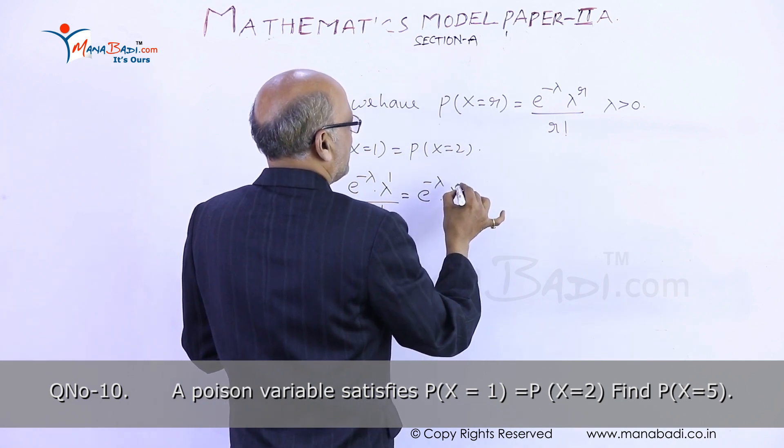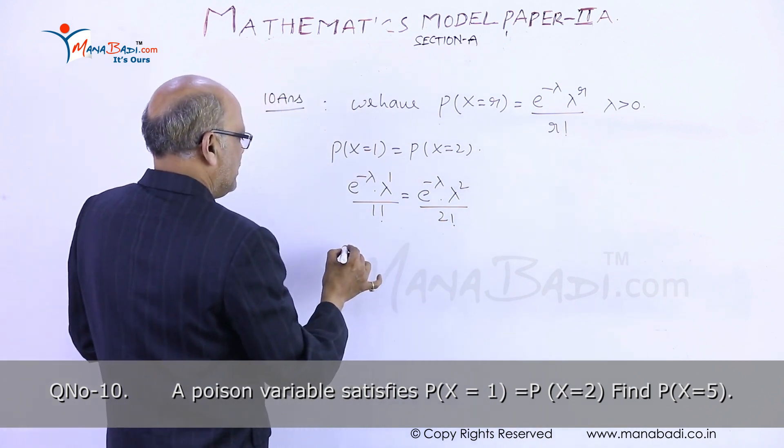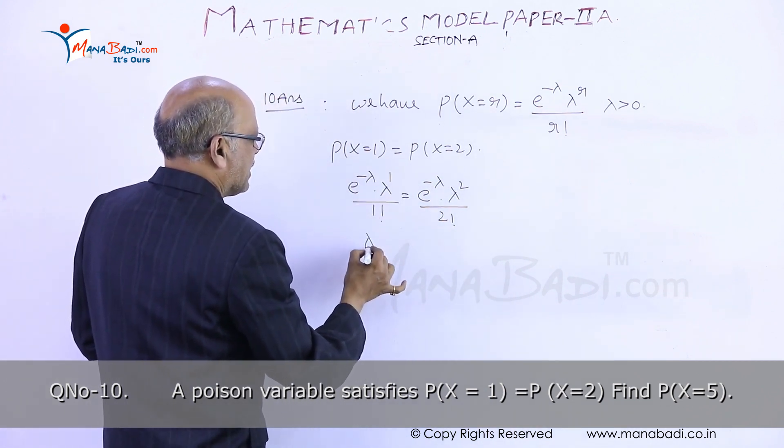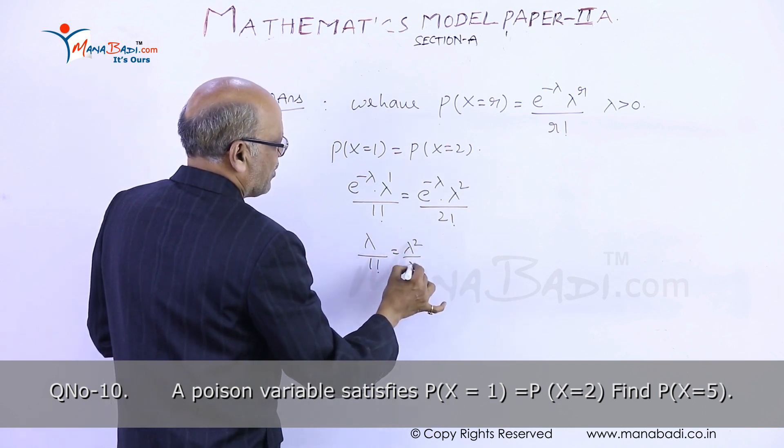Now e to the power of minus lambda will get cancelled. Lambda by 1 factorial equals lambda square by 2.